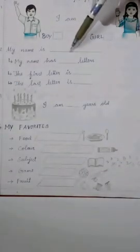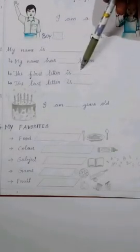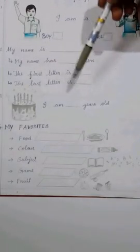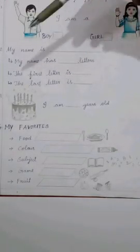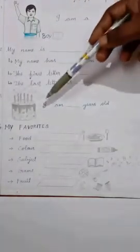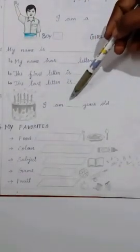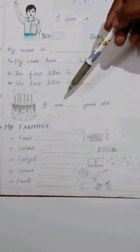Likewise, you have to write your name, then count the letters in your name and write the number, then write the first letter of your name, then the last letter of your name. Move to the third question: I am ___ years old. Here you have to write your age, such as 5 or 6.